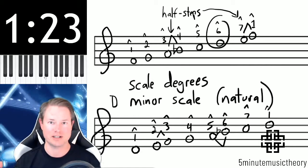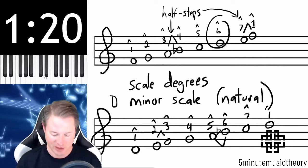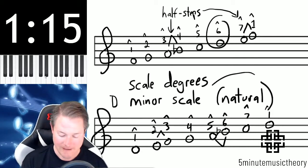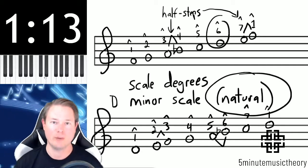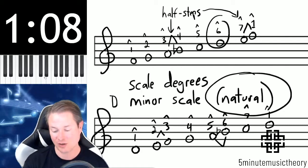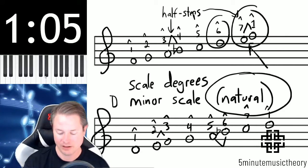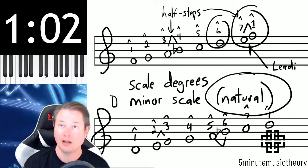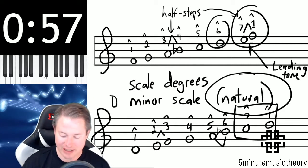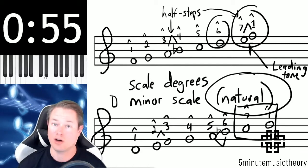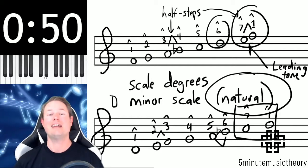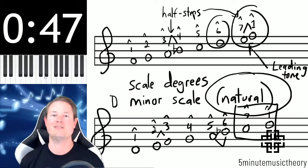You can kind of hear the darkness of that scale versus the brightness of the F major scale. So these two scales, major and minor, are very closely related to each other. Now remember, this is the natural minor, and it's the one that's not used very often because it doesn't have a leading tone. The leading tone is a half step away from the first scale degree — here's the leading tone in major. Notice that seven and one in the natural minor are a whole step away from each other. So in order to create a leading tone, we need to make an adjustment — and hence the different types of minor, which we'll cover in the next video.